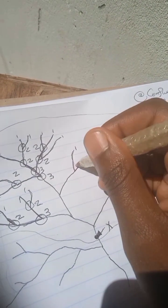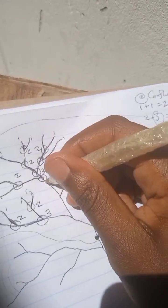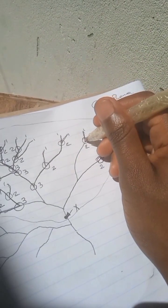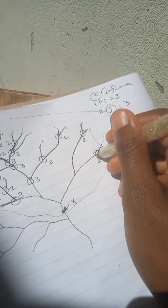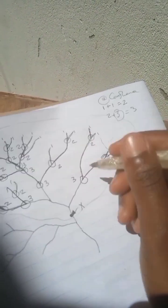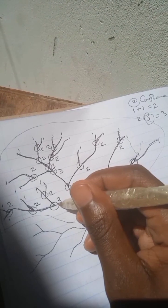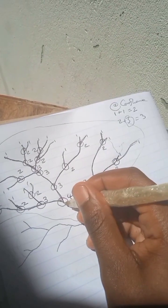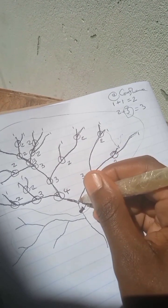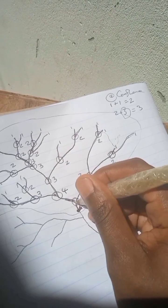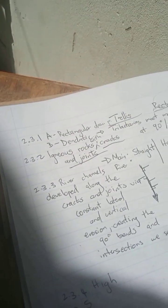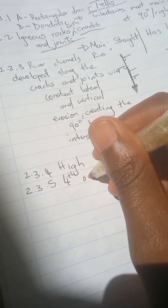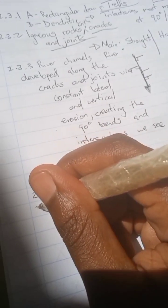Continuing: two and three gives three; two and one is still two; three and two is still three. Then two and two makes three. Three and three — same number, go up by one — that is four. Four and three: the bigger number wins, so that is four. This means the stream order at X is fourth order. That is our answer for question 2.3.5.